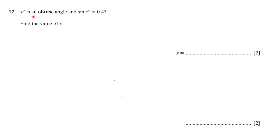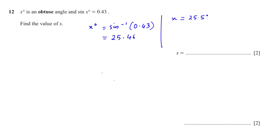Question 12: x° is an obtuse angle and sin x° = 0.43. Find the value of x. First, calculate sin⁻¹(0.43) using the shift/sin button on the calculator to get 25.46°, which rounds to 25.5°. But we want the obtuse angle, so we subtract the acute angle from 180°: 180° − 25.5° = 154.5°. This is the rule to remember: for sine, subtract the acute angle from 180 to get the obtuse angle.